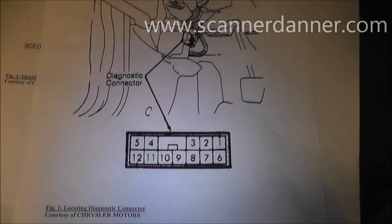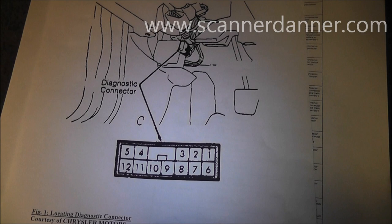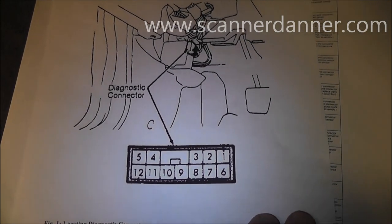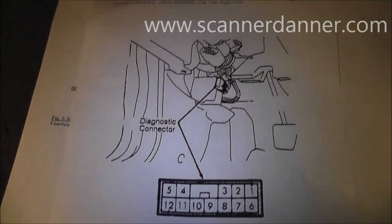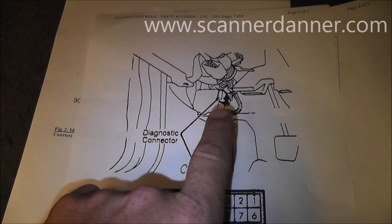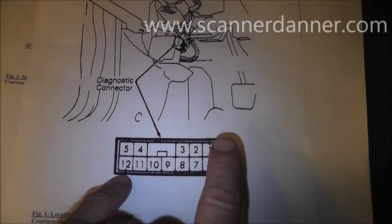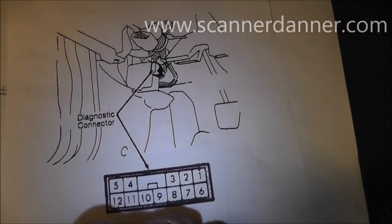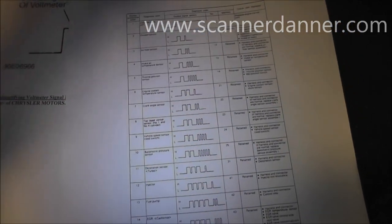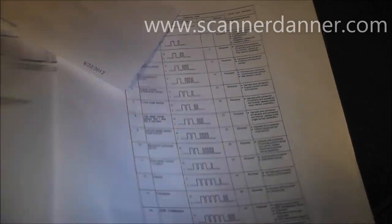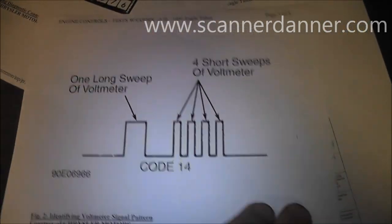Okay, just real quick on our information and this is from Mitchell, this is why you need to have a good database when you do troubleshooting. So it shows you a picture where the data link connector is located. Shows you a picture of the data link connector. Pins 1 and 12 is where we connect our leads. That was in the procedure.